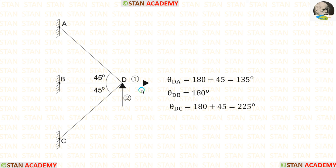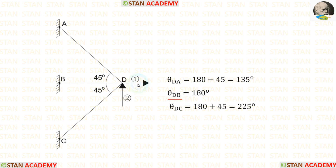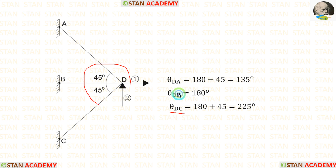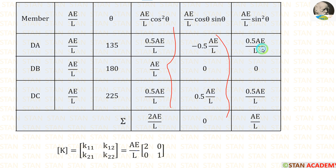Now let us calculate the angles from the reference line. For theta DA: the angle is 180 minus 45, giving 135 degrees. For theta DB: this angle is 180 degrees. For theta DC: the angle is 180 plus 45, giving 225 degrees. Now let us make the table — AE/L is constant so we keep it as a factor. Computing cos²θ, cosθ·sinθ and sin²θ for each member and summing, we form the stiffness matrix.